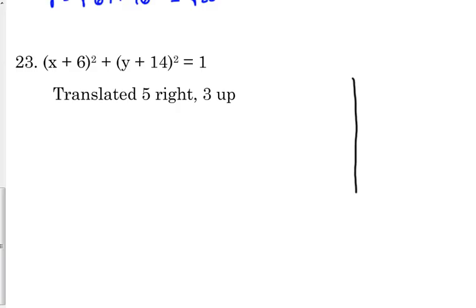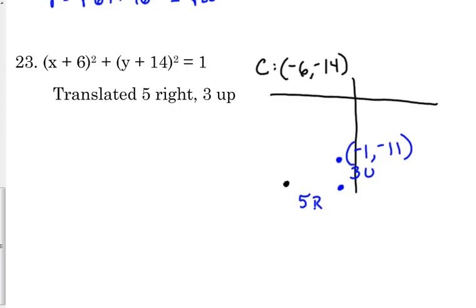So where is my center right now? My center is negative 6, negative 14. Negative 6, negative 14. I'm just going to kind of guesstimate that it's right there. Not changing the radius at all, so I really don't care about that. But if I'm taking that point and I'm moving it 5 units to the right, where am I going to end up? I was at negative 6. If I go 5 units to the right, where are we going to end up? Negative 1. And if I go 3 units up from there, where am I going to end up? Negative 11. This is 5 right, 3 up. We're going to end up at the point negative 1, negative 11.